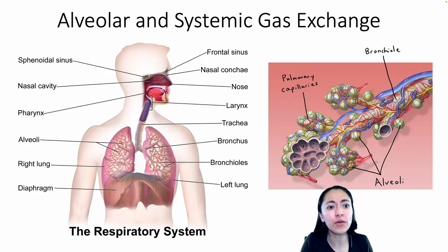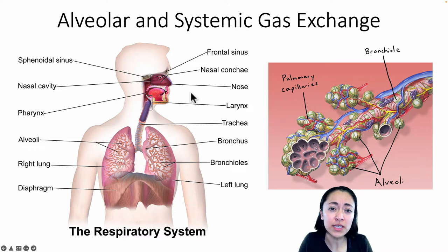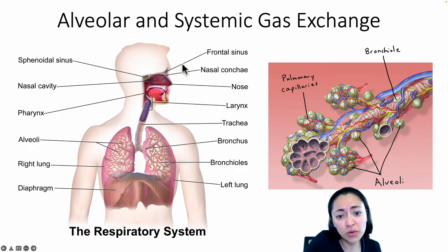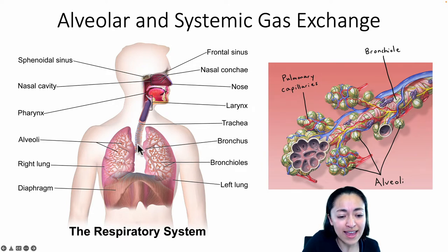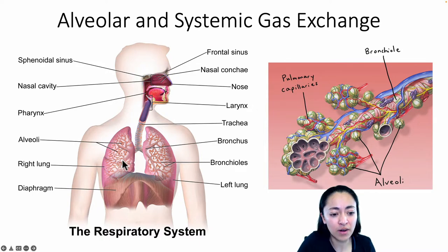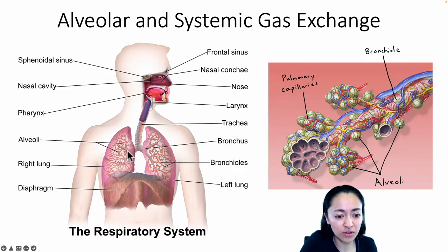Before we talk about where alveolar and systemic gas exchange occurs in the body, let's do a quick review of the structures of the respiratory system. One of the main functions of the respiratory system is to bring air into our body and to our gas exchange surfaces. The nose and mouth are two ways that we bring air into the body. The air then travels down through the pharynx, which leads to the larynx — our voice box — and then down the trachea, into each one of our lungs. The main airways that bring air to our lungs are called the bronchi.